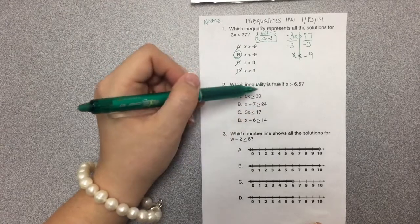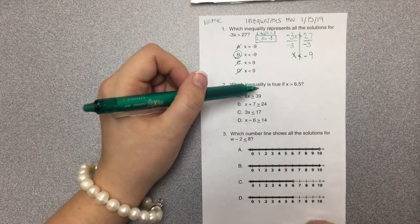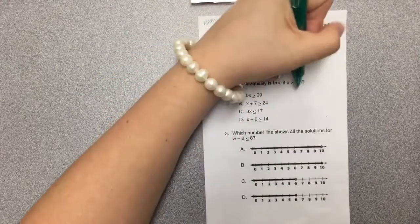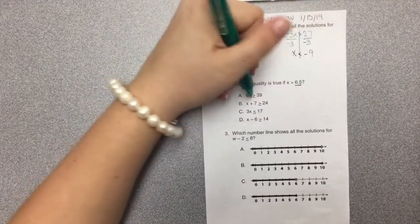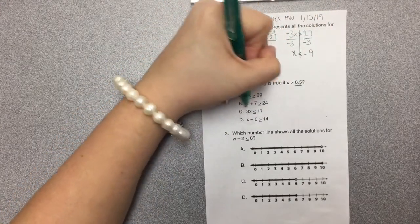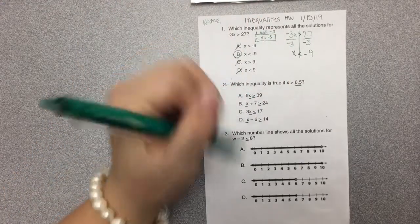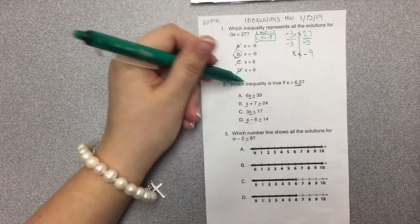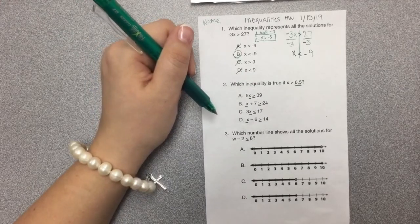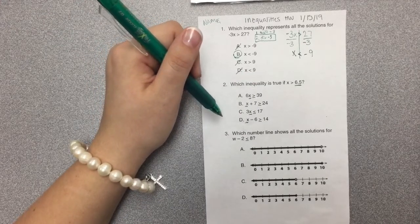All you're doing on number two is taking 6.5, because x is greater than 6.5. You're going to plug in this number anytime you see x and see if that makes the inequality true. You're looking for which one is true. There's probably going to be quite a few that are false.